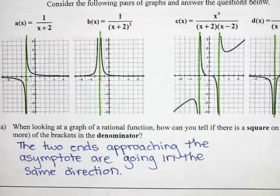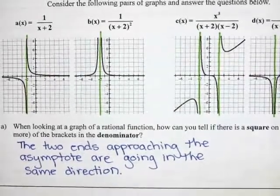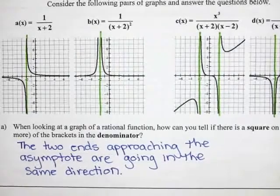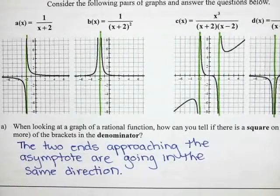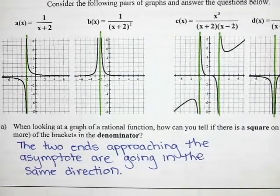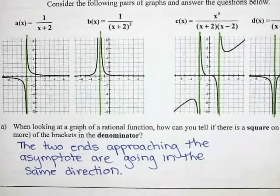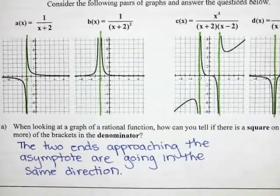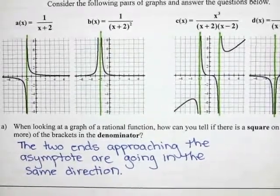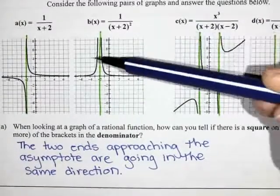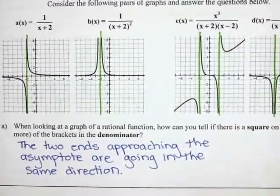And if you think about x intercepts, if an x intercept has a square on it, it ends up making a little critical point or a vertex, right? So that it heads back in the same direction that it came from. So here, kind of the same idea, when it has a square, they're both going to go in the same direction.